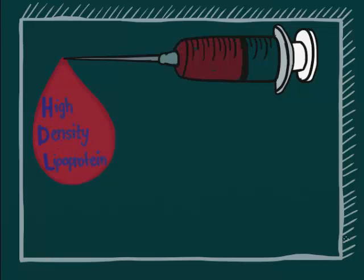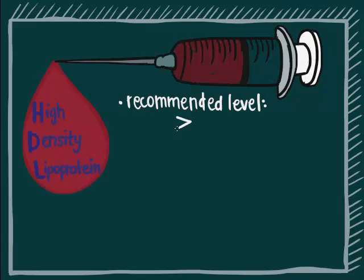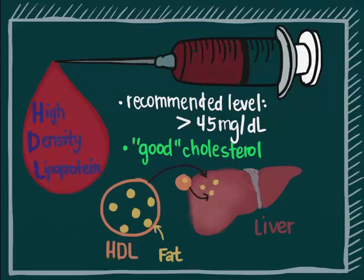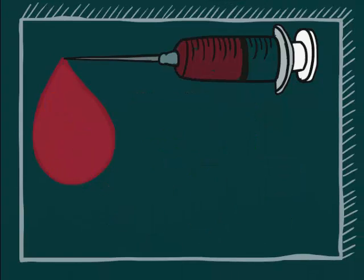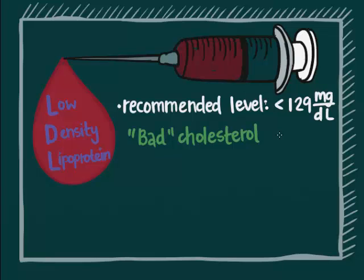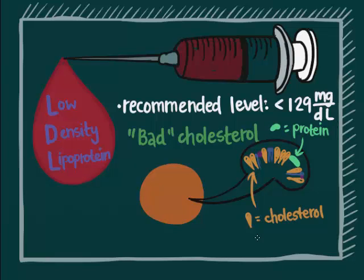HDL, or high density lipoprotein, has a recommended level of more than 45 mg per deciliter. It is often referred to as good cholesterol and helps bind fat in the blood and carry it to the liver for disposal. LDL, or low density lipoprotein, has a recommended level lower than 129 mg per deciliter. It is often referred to as bad cholesterol and is made up of mostly fat and only a small amount of protein. A high LDL level may increase your chances of developing heart disease.